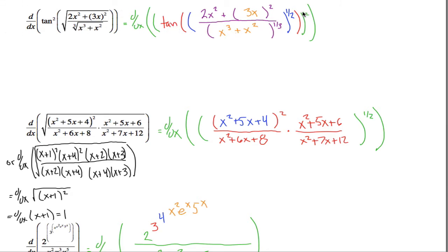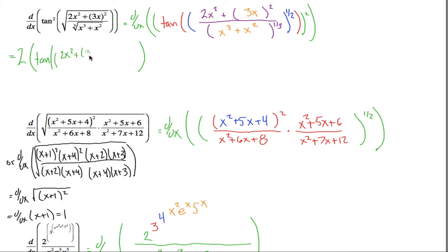The outermost function is something being squared — that's what's in green. So I'm taking the derivative of something squared. I use the power rule, take that two, bring it down in front, leave everything else alone, and subtract one from the exponent. Instead of taking the derivative of x squared and calling it 2x, I'm taking the derivative of this mess squared, so I call it two times the tangent of 2x squared plus 3x squared, divided by x cubed plus x squared to the one-third, all to the one-half.